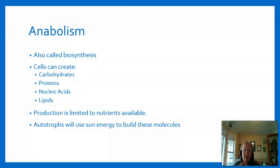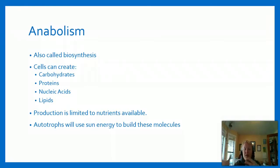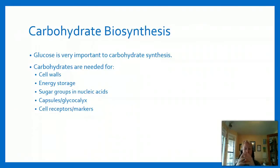Autotrophs can use the sun's energy to build all the molecules they need - that's why they're called autotrophs. The production limitation usually refers to heterotrophs. But even an autotroph, if it doesn't get enough sunlight or doesn't have enough carbon, can't build these molecules.